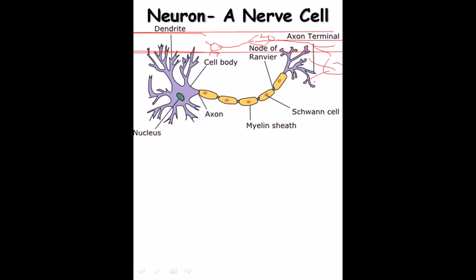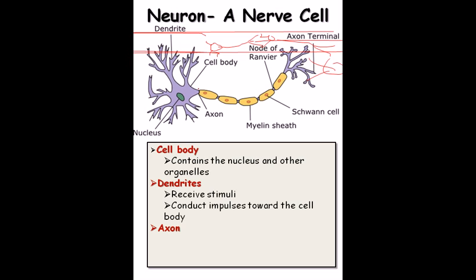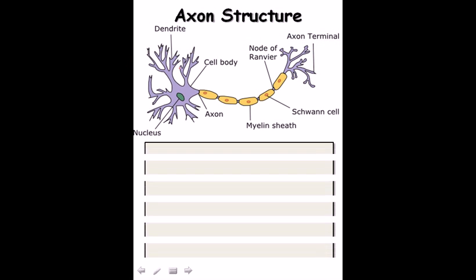The axon attaches to the dendrons of the next nerve — that is how the whole linkage works. The cell body contains the nucleus and other organelles necessary for nerve impulse flow. Dendrites are the protrusions coming out from the cell body; they receive the stimulus and conduct impulses toward the cell body. Axons carry the impulses away from the cell body — so dendrons take impulses from the previous neuron and axons release impulses to the next neuron.